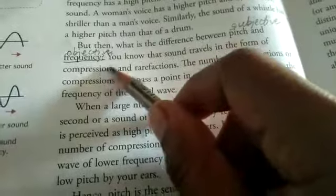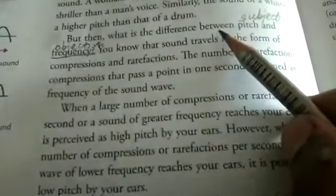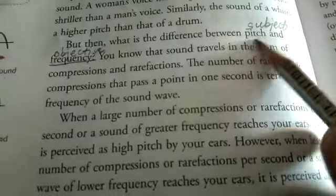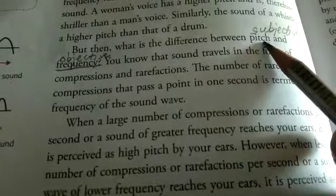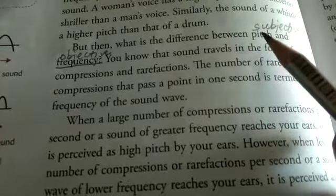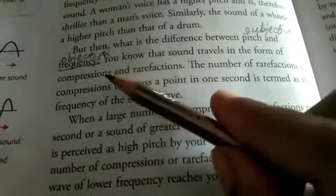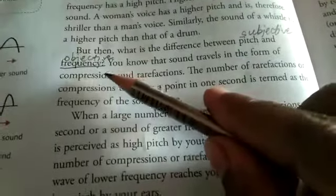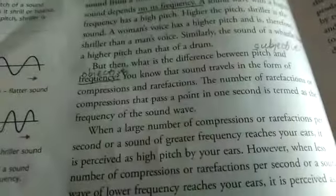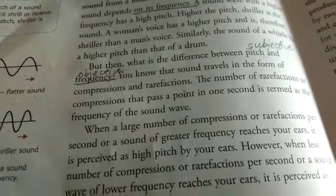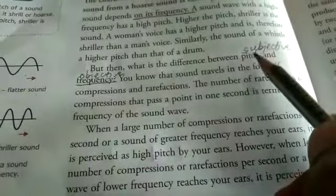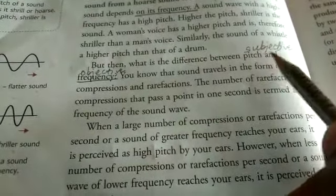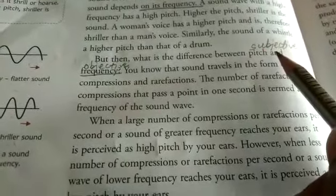There is a difference between pitch and frequency. Pitch is a subjective quantity — it only describes the perception of what type of sound is being produced. Frequency is an objective quantity — we can count the number of waves formed. So frequency is objective whereas pitch, being the perceptive measurement, is subjective.